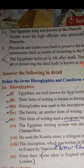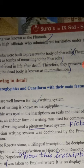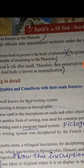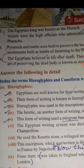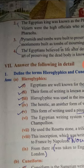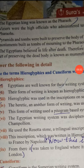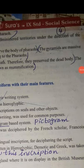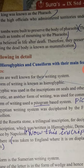3rd question: What is a Pyramid and why was it built? Pyramids and tombs were built to preserve the body of Pharaohs. The Pyramids are massive monuments built as tombs for the Pharaohs. 4th question: What is the process of mummification? The Egyptians believed in life after death, therefore they preserved the dead body. The art of preserving the dead body is known as mummification.